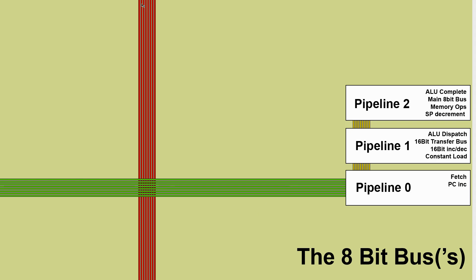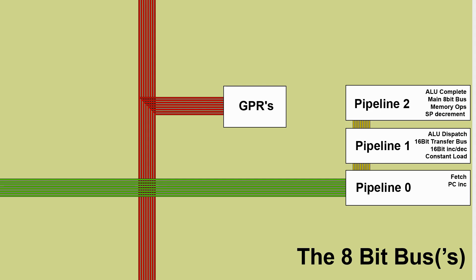On the main 8-bit bus what we're going to have is some general purpose registers. These are going to be latch-based and they store numbers. One of the first things you look at when examining a new processor architecture to program it is what registers do I have, and then what operations you can perform on them. That's your fundamental building blocks of software.